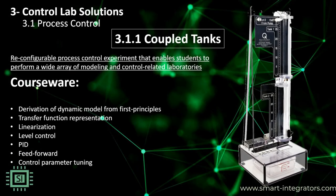The coupled tank system consists of a single pump with two tanks. Each tank is instrumented with a pressure sensor to measure the water level. The pump drives water from the bottom basin up to the top of the system. Depending on how the outflow valves are configured, the water flows to the top tank, bottom tank, or both, with variable outflow orifices allowing several interesting single-input single-output configurations. Two or more coupled tanks can be combined for multiple-input multiple-output experiments.